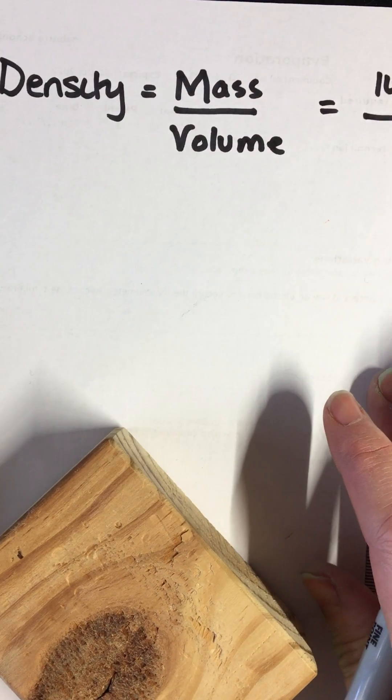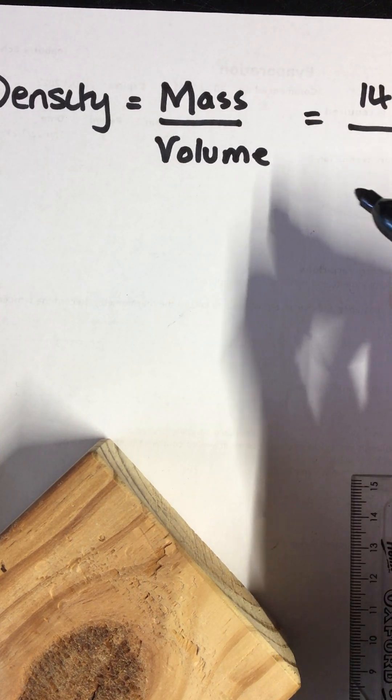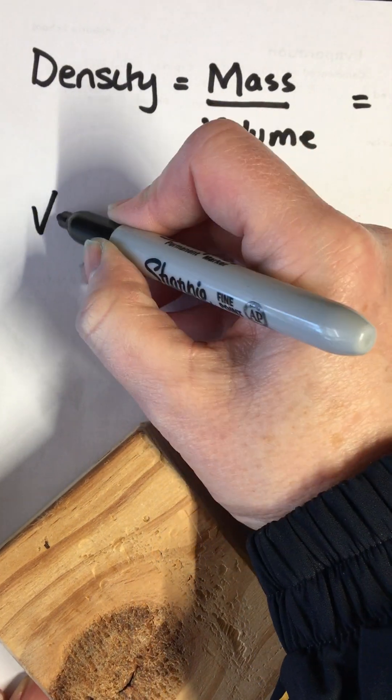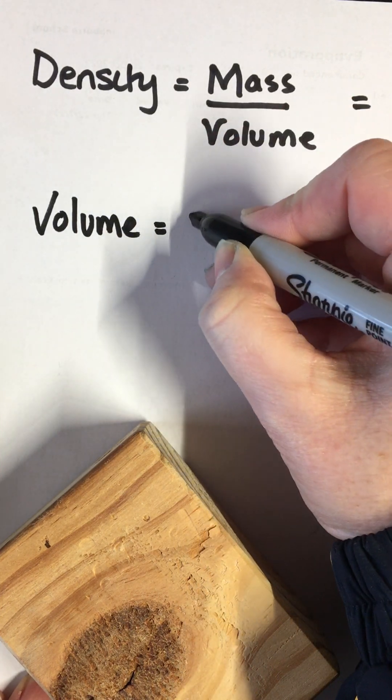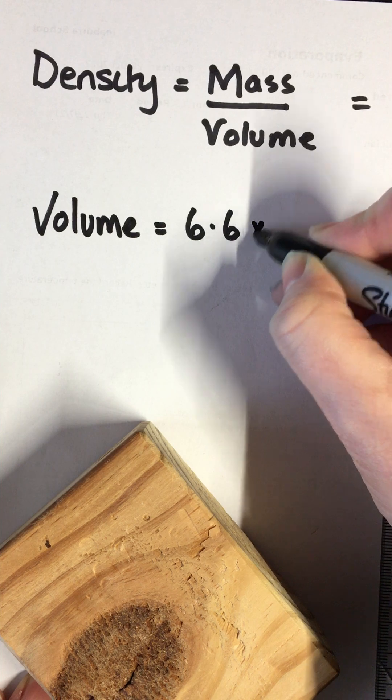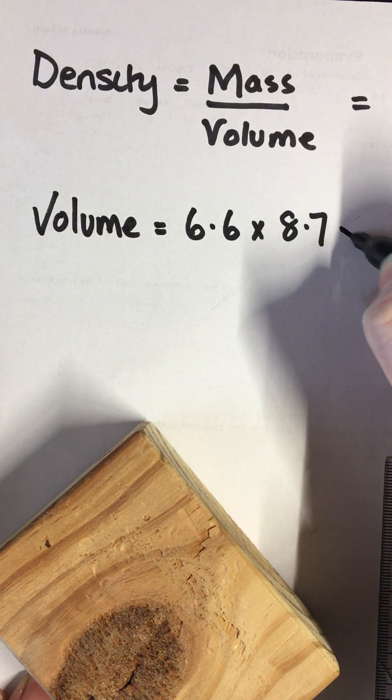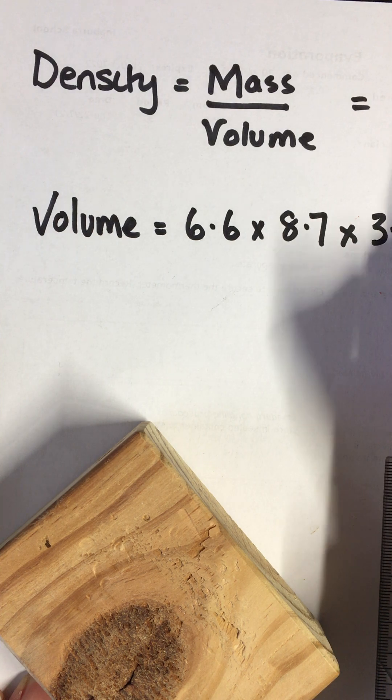So our volume is 6.6 multiplied by 8.7 multiplied by 3.7.